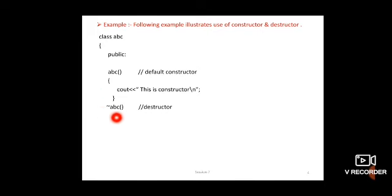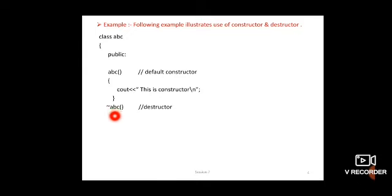The difference between the constructor and destructor: abc() has no return data type, no argument — it is the default constructor. Tilde sign abc() — tilde sign, class name, no return data type, no argument — this is the destructor. Inside the destructor, print the statement 'this is a destructor'. End the destructor function and end the class.